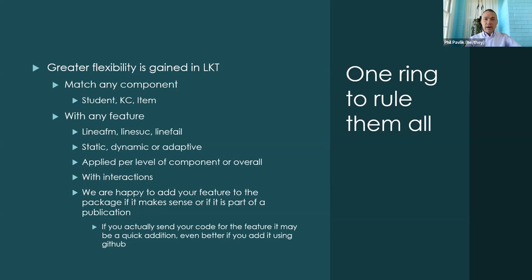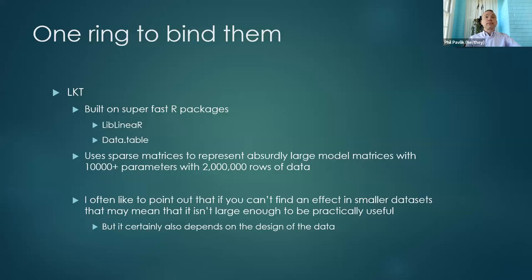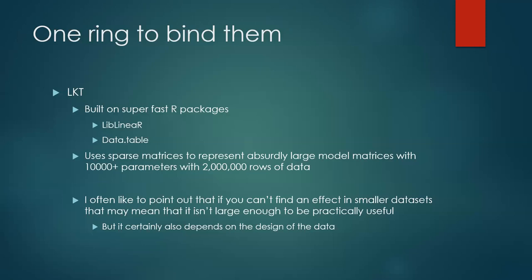LKT is built on super-fast R packages. It's not based on the built-in logistic regression, which causes some limitations. One limitation is that we can't do mixed effects regression currently — we're looking at a package called Julia that might allow that, called via an R package called JuliaCall.